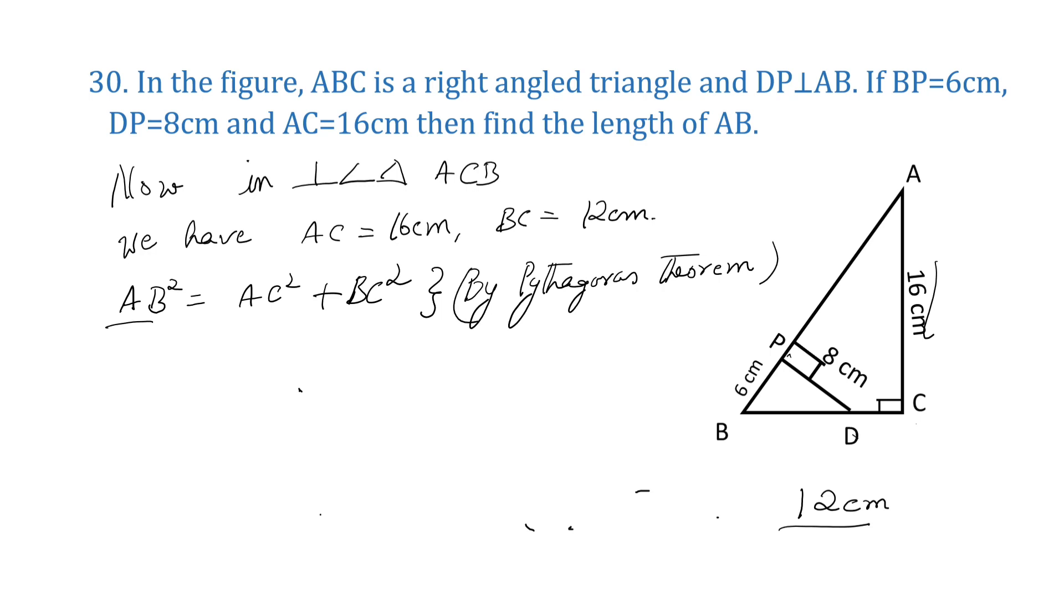Let us substitute. We can substitute AC square, that is 16 square. We can substitute BC, that is 12 square. 16 square is 256, 12 square is 144. That is equal to 400. AB square is equal to 400. We have to find the length of AB. So AB is equal to square root of 400, that is 20. The length of AB is equal to 20 centimeters.